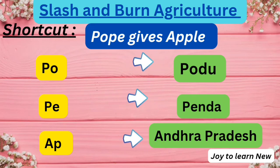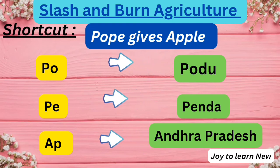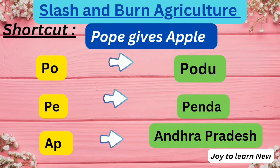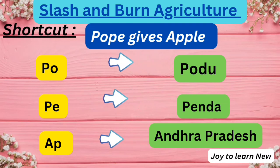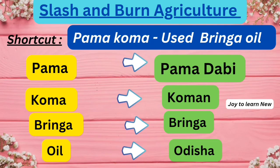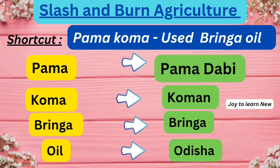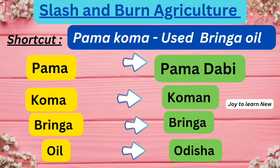The next shortcut is 'Bob gives apple.' PO refers to Podu, PE refers to Penda, and AP — from apple — refers to Andhra Pradesh. So Podu and Penda are the names for slash and burn agriculture in Andhra Pradesh.